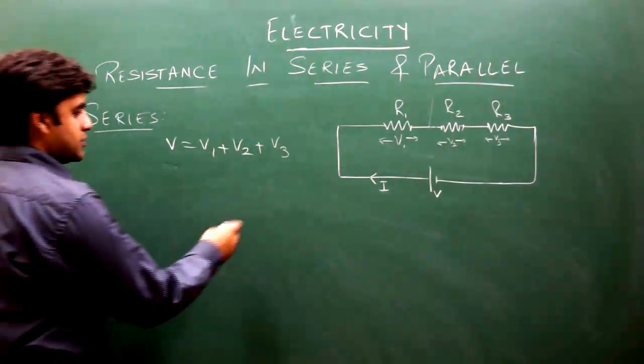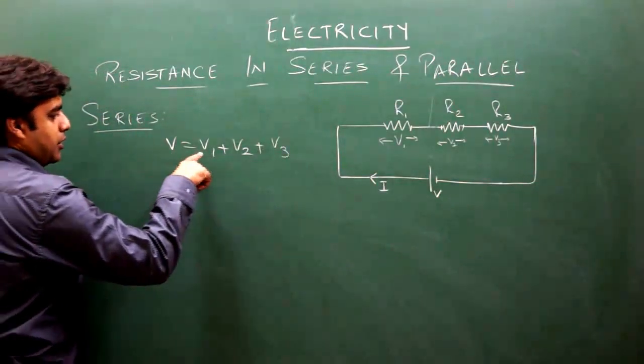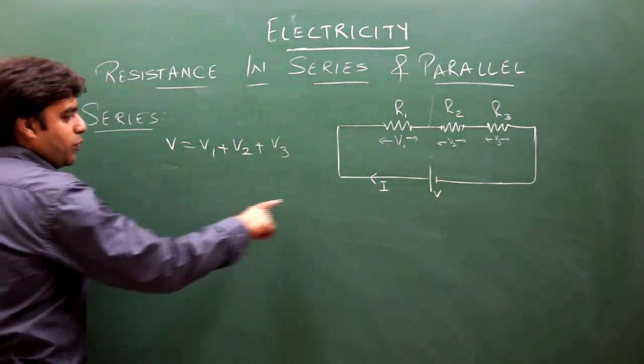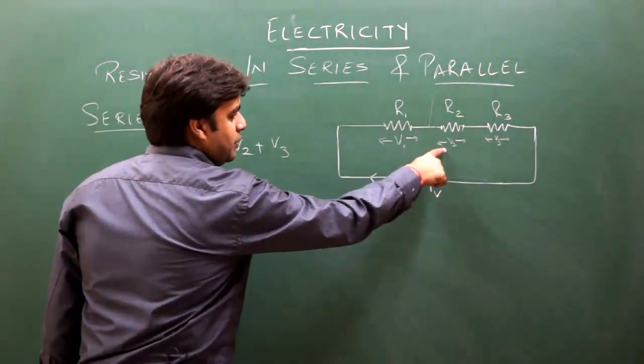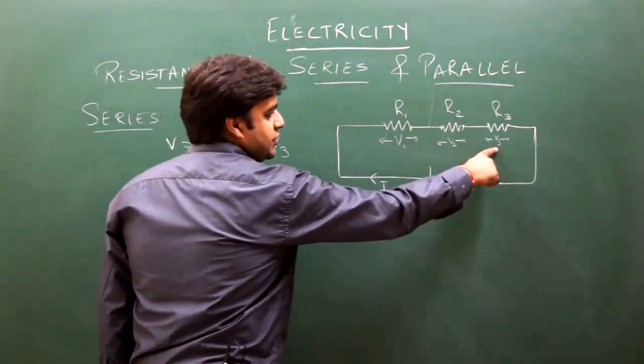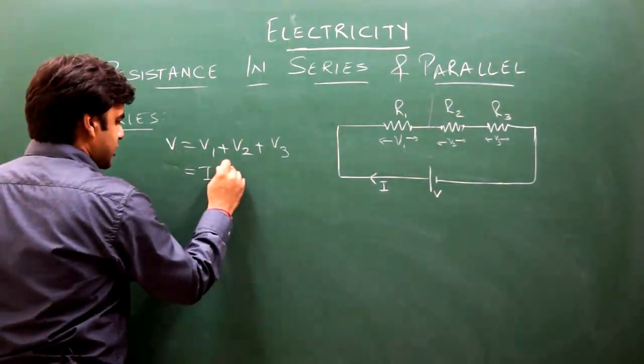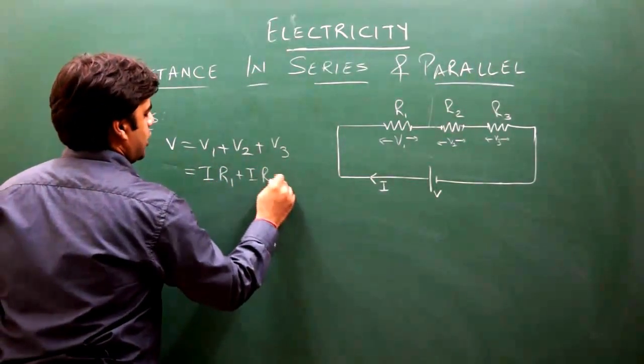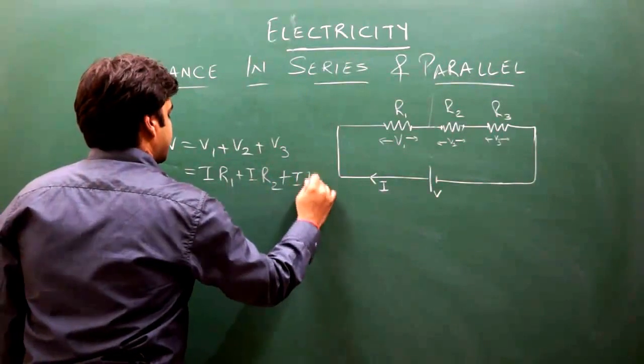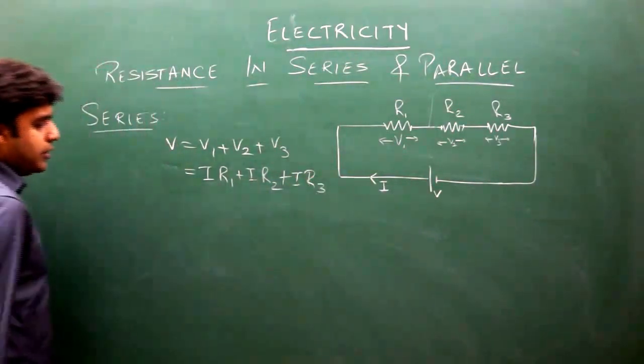V1 will be equal to I into R1, V2 will be equal to I into R2, and V3 will be equal to I into R3. So this can be written as I into R1 plus I into R2 plus I into R3.